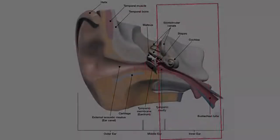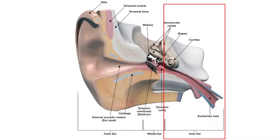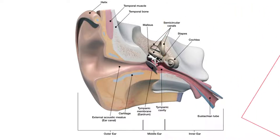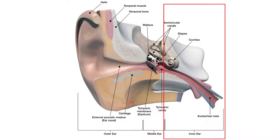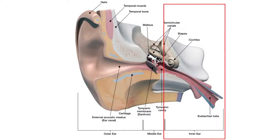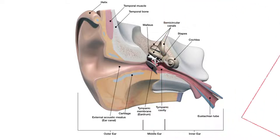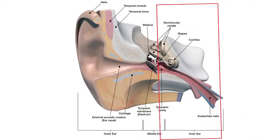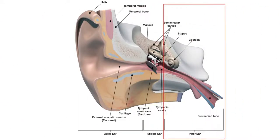The inner ear contains the utricle, saccule, and the bony labyrinth, which includes the semicircular canals and the cochlea. The utricle and saccule are involved in displacement and linear accelerations such as tilting the head and orientation. The semicircular canals are filled with fluids and are involved in maintaining balance and coordination.